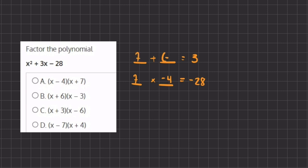If I were to do the opposite, we would get a negative 3. So 7 plus -4 gives us positive 3, and 7 times -4 gives us -28.